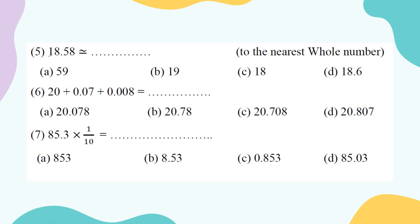Number five: 18.58 with the approximation sign — round this number to the nearest whole, which means round to the nearest ones place. Find your ones place: it's 8. Look at the right-hand digit: 5 or more, so add one more. 1 plus 8 equals 9, and drop the decimal part. The answer is 19.